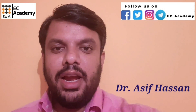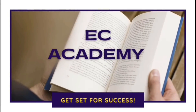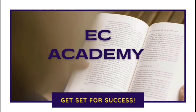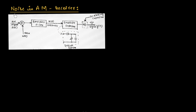Hello friends, welcome to ESEA Academy. In this lecture, let us understand noise in AM receivers. Here, let us find the expression of figure of merit for AM receiver. We will follow the same procedure as our previous video: first we will find the signal to noise ratio of channel, then the signal to noise ratio of output, then take the ratio of these two parameters to find the figure of merit.